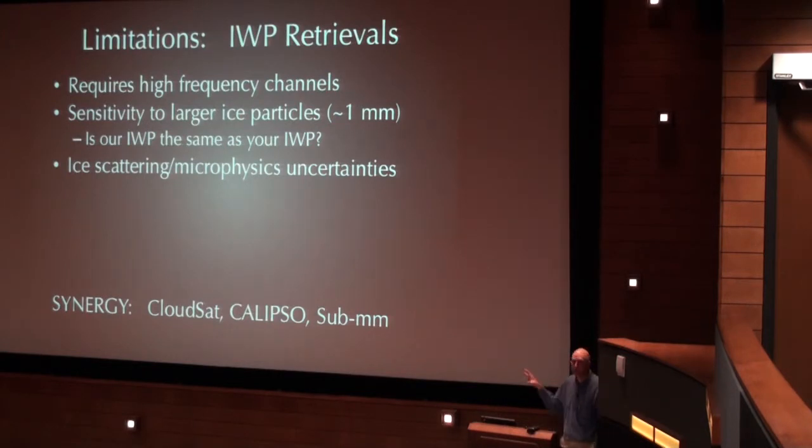Synergies, again, I'm always going to come back to active. Using active with passive helps eliminate some of these uncertainties or beats them down, provides constraints. And a new synergy that I'll put on this ice water path is actually sub-millimeter, getting observations into the sub-millimeter range of the spectrum to help constrain these scattering issues with ice water path.